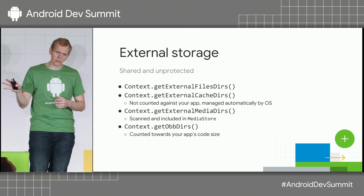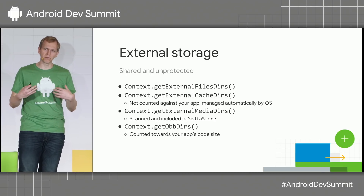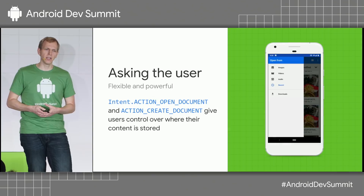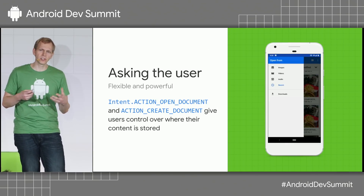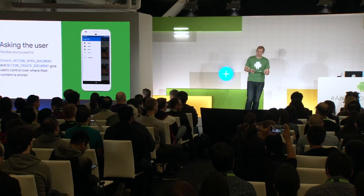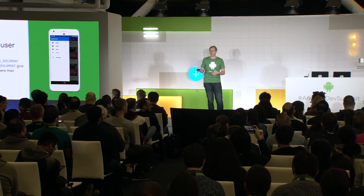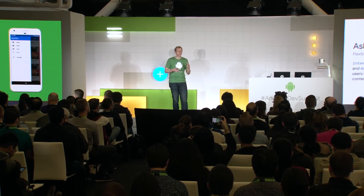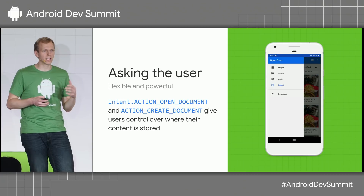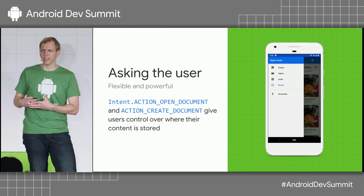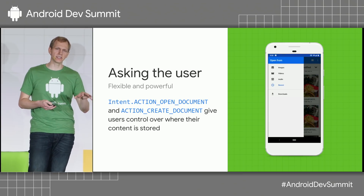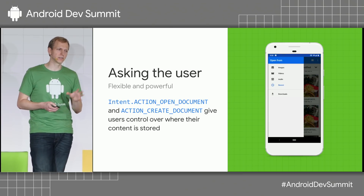So far we've talked about internal storage and external storage — great places for data that belongs to your app. But you might find yourself creating data that belongs to the user, that the user may want to store in a different location. That's a great place to use the Storage Access Framework. There are two intents: ACTION_OPEN_DOCUMENT and ACTION_CREATE_DOCUMENT, available since KitKat. You can think of them as an open and save dialog for the user. It also opens the door for cloud storage providers without requiring you to integrate a cloud provider SDK.